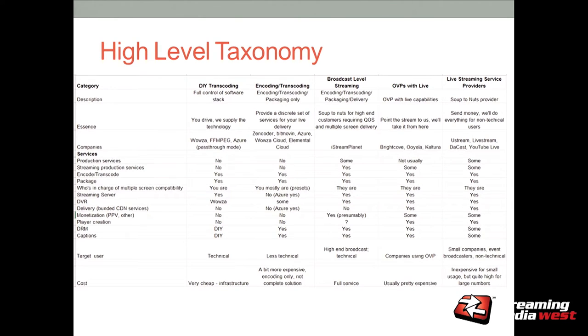There's also an interesting category: iStream Planet, which specializes in big events that are very hard to do — the Olympics, events where you need multiple forms of acquisition, where everything's got to be high quality and foolproof, and networks don't have experience doing this. They do a certain percentage of these things but they're not going to create the player for you. They do production services, encode/transcode, packaging, delivery, and acquisition — a lot of hand-holding for big events.